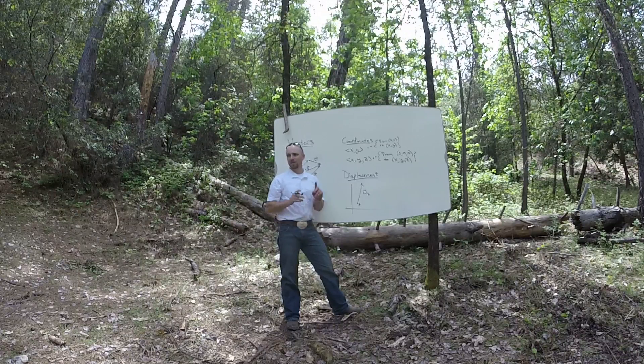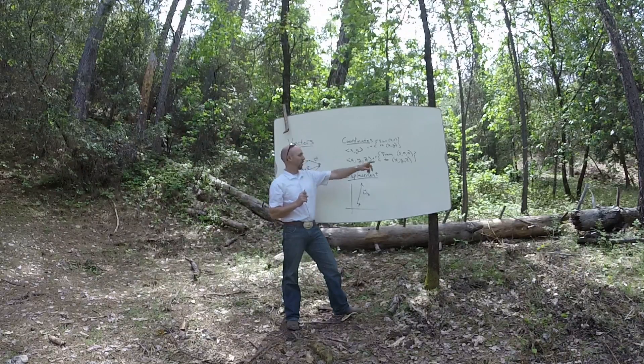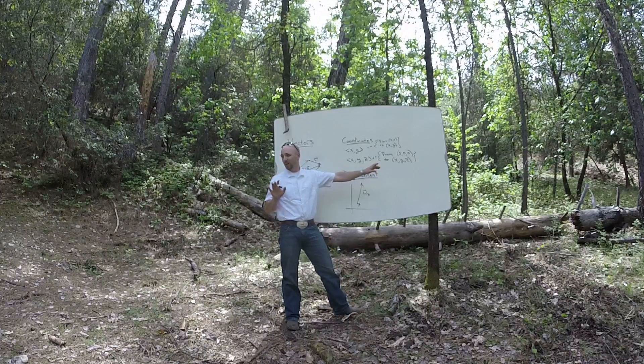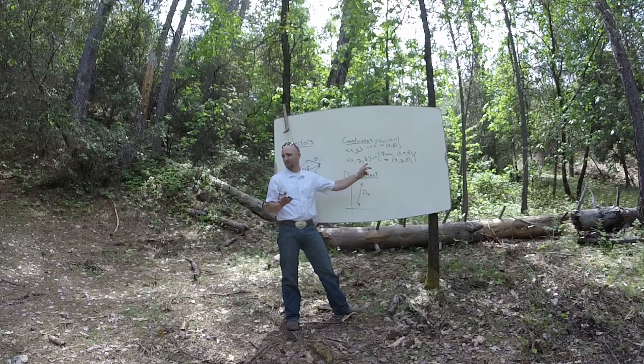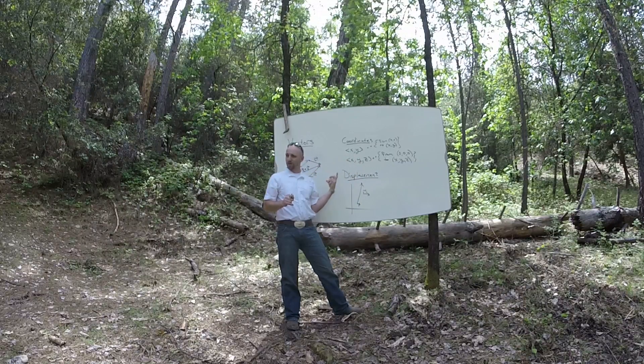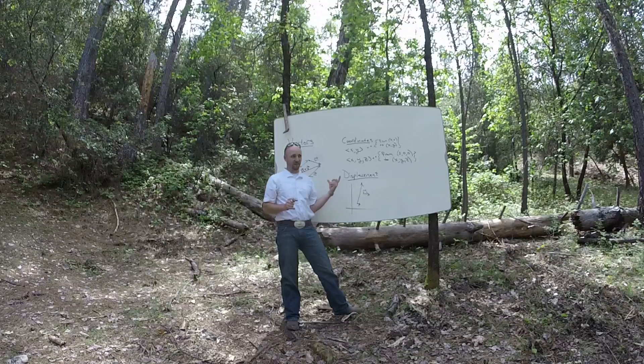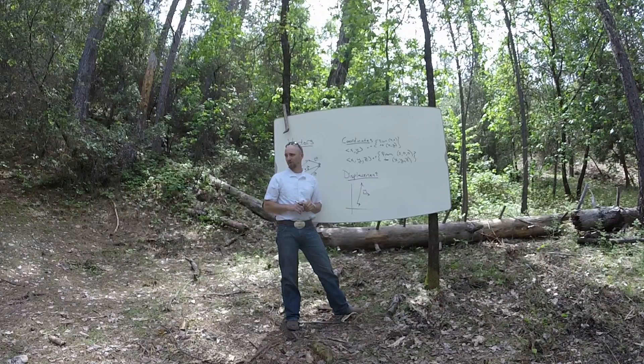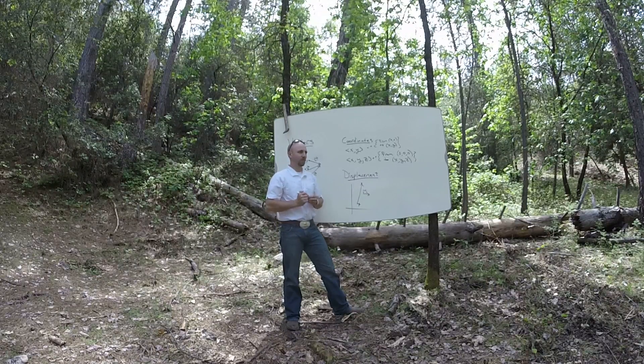So main deal, a vector is a way to think about a point a little bit, except that you can add them. Right? But don't think of them just as a point. Make sure you're thinking of them as an arrow that ends at that point. Cool? All right.